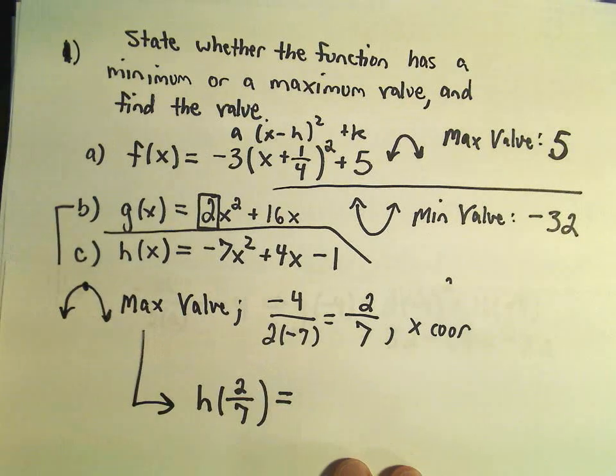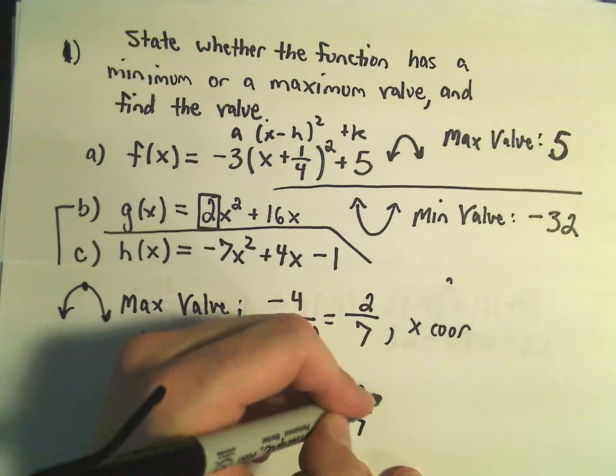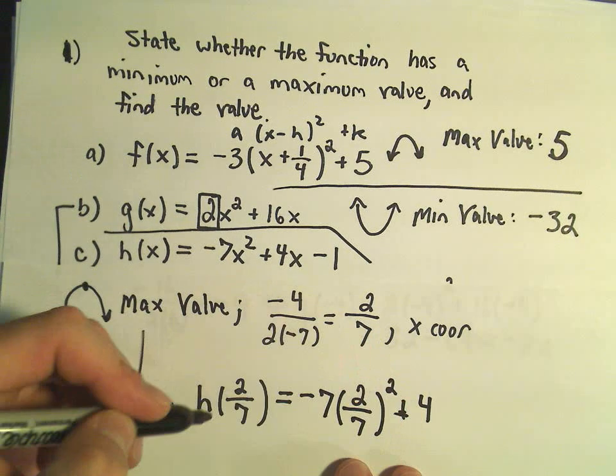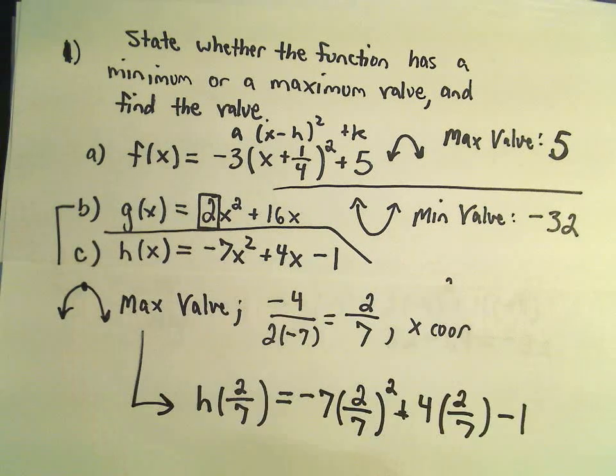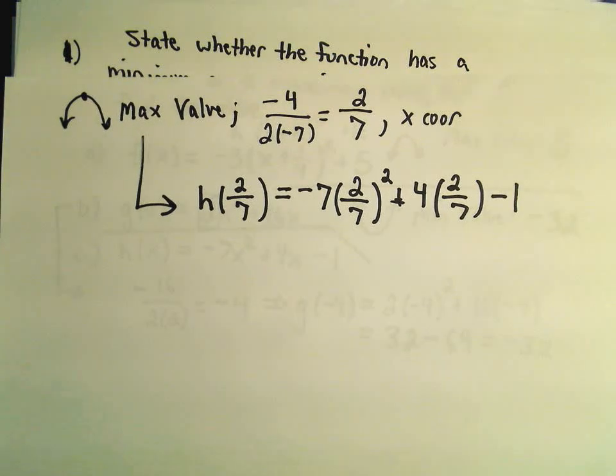So I have to plug it into my h function here. So that was negative 7 times 2 sevenths squared plus 4 times 2 over 7 minus 1. So a lot of little fractions going on here. That's okay.